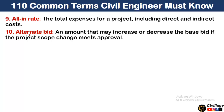Point number 10 is alternate bid, which is very common and important for civil engineers. An alternate bid is an amount that may increase or decrease the base bid if the project scope changes and it meets approval.